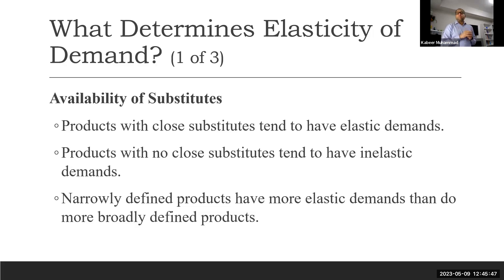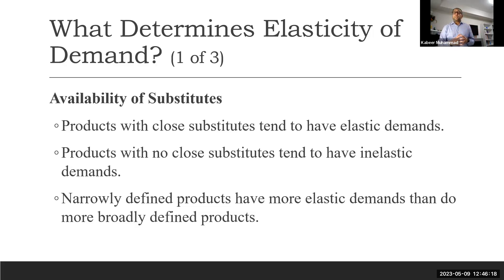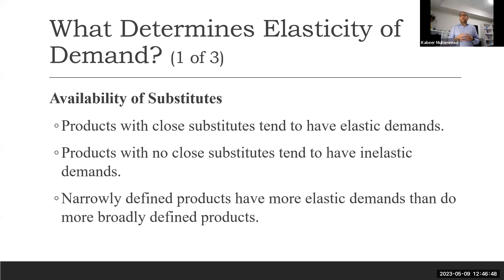The second determinant is narrowly defined products. If we define a product narrowly — meaning a very specific product — in that case, the product has a more elastic demand than more broadly defined products. For example, demand for medicines in general is inelastic because when someone is sick, they have to take medicine whatever the price. But for a very specific medicine, there is a close substitute available. For instance, between two painkillers like Tylenol or Advil, if the price of Tylenol increases, someone can take Advil instead.